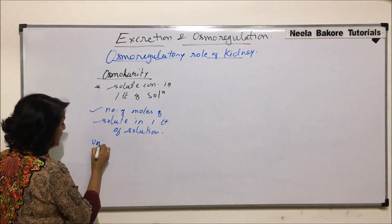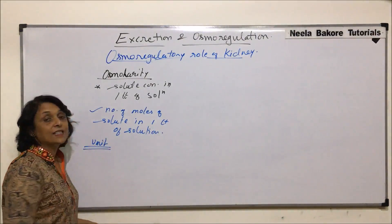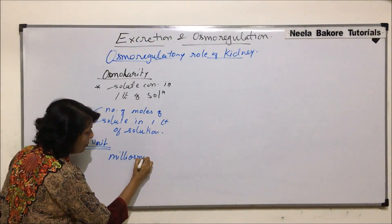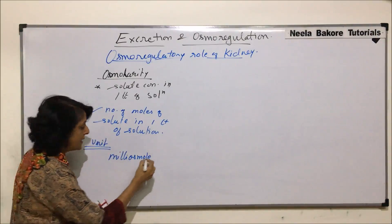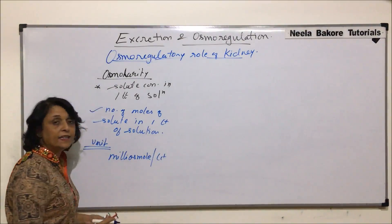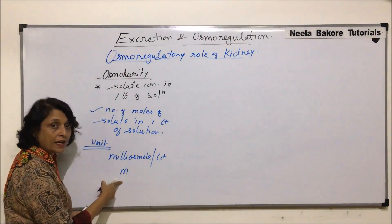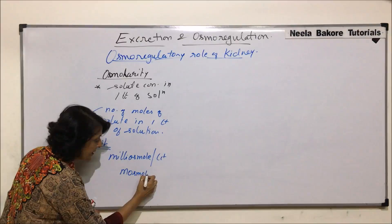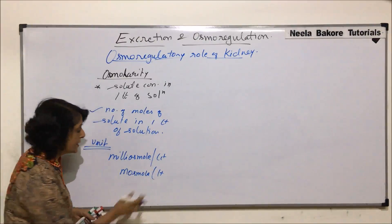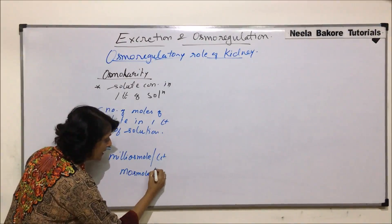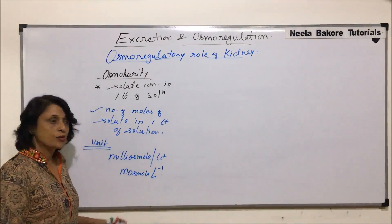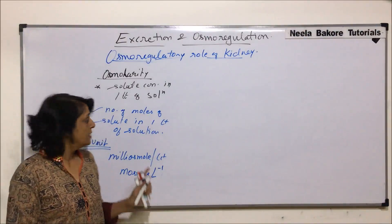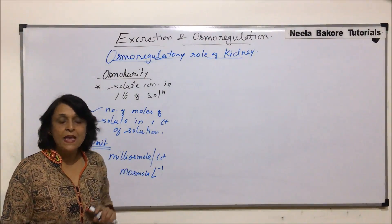The unit in which we express osmolarity is milliosmol per liter. In short, it is written as milli-osmol per liter — 'M' for milli and osmol per liter. So these are the units or expressions in which we talk about osmolarity.